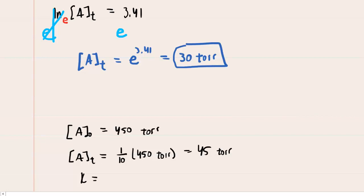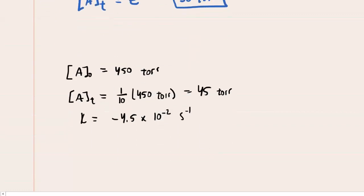The rate constant, lowercase k, is still negative 4.5 times 10 to the minus 2 inverse seconds. And what we are looking for is the time in this case. So let's write out the same formula and plug in our known values.